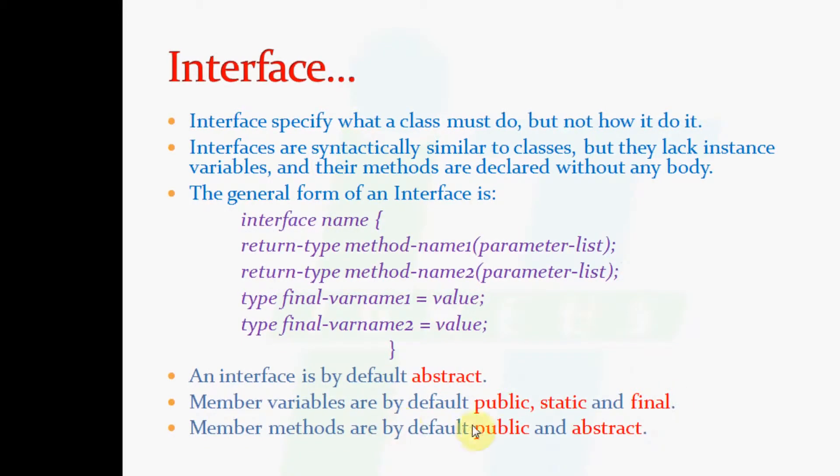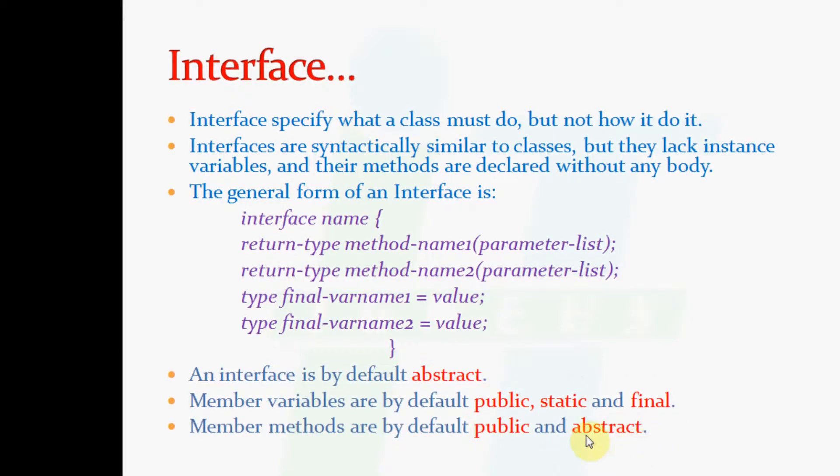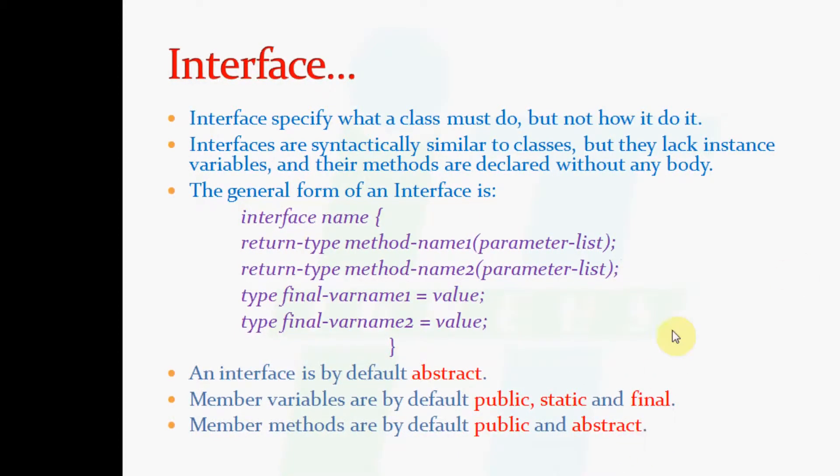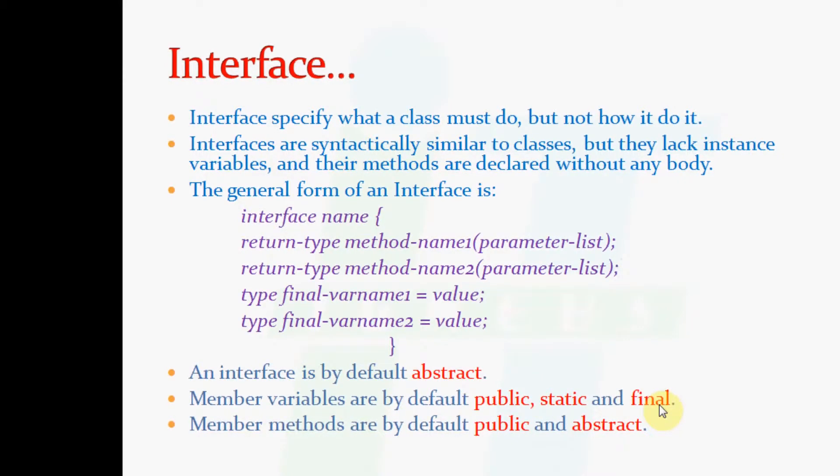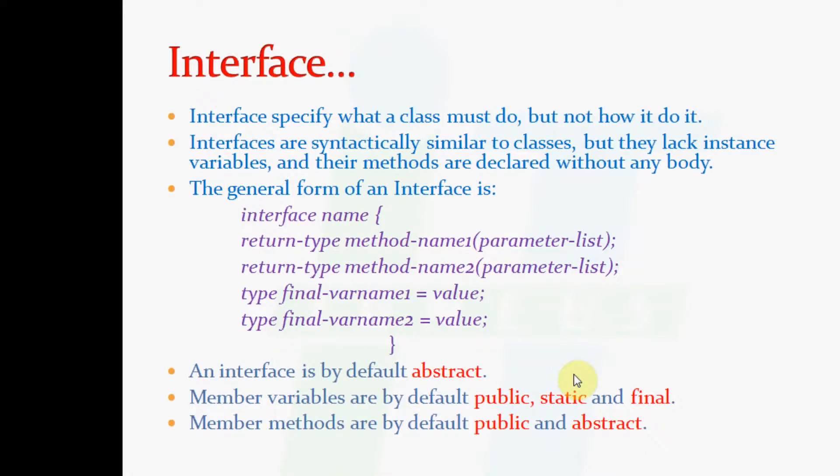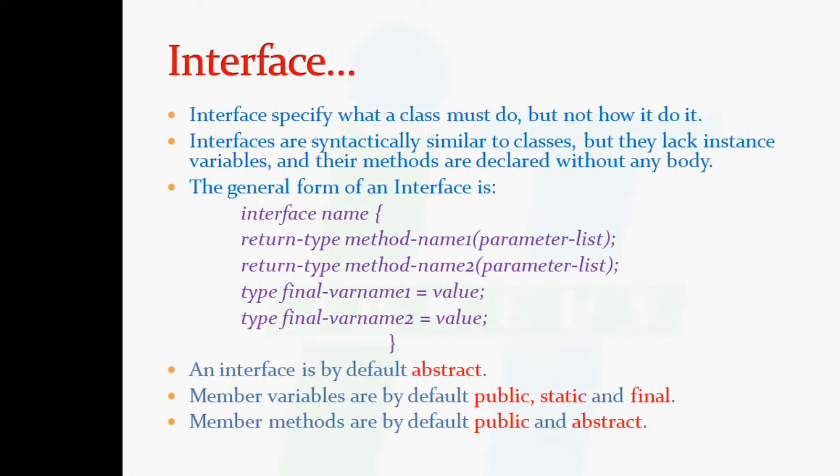Member methods are by default public and abstract. By abstract we mean the body is not defined. By final we mean their value cannot be changed. And by static we mean that they are called by name of the class, and here in this case, name of the interface.